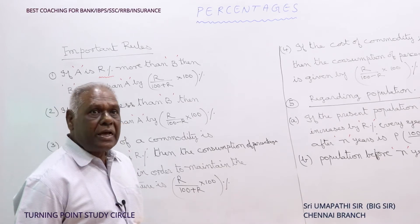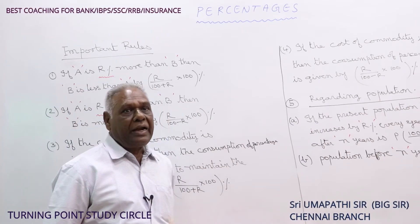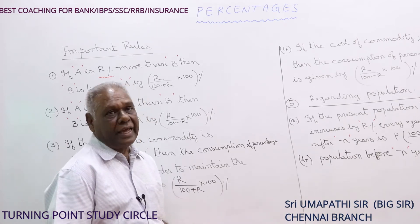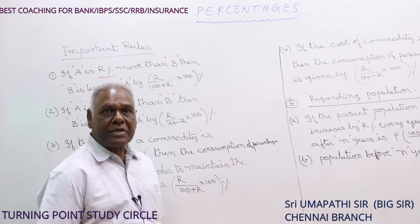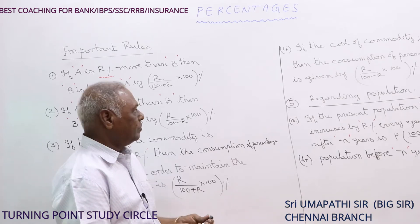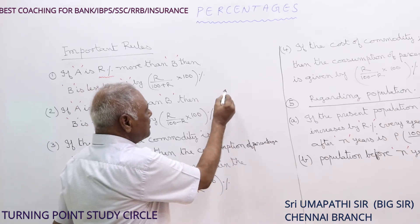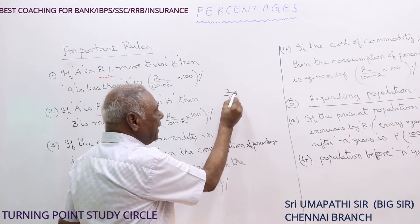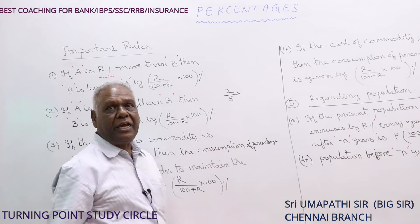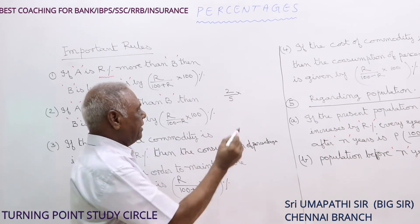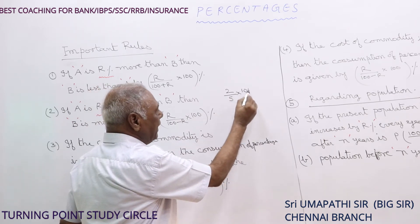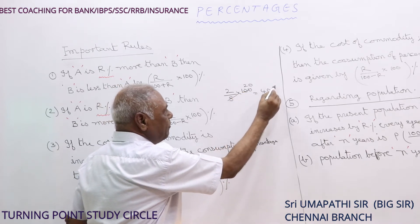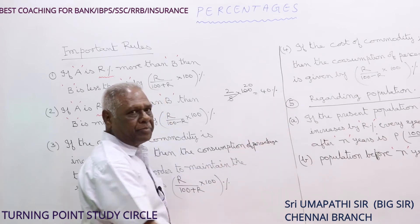Suppose a fraction is given and it is to be converted into percentage, then the given fraction must be multiplied by 100. For example, if 2/5 is given and it is to be converted in terms of percentage, it must be multiplied by 100. So 2/5 into 100 — 5 goes into 100 twenty times, so 20 into 2 is 40. Therefore, 2/5 is equivalent to 40%.